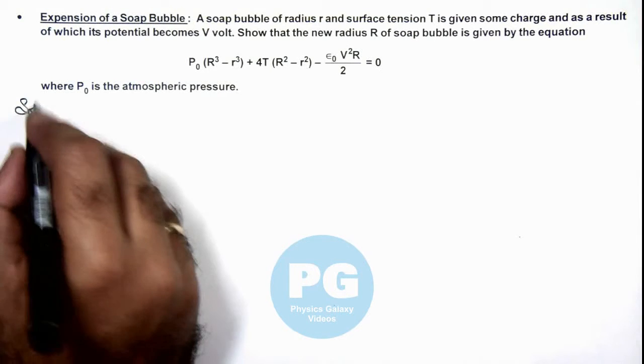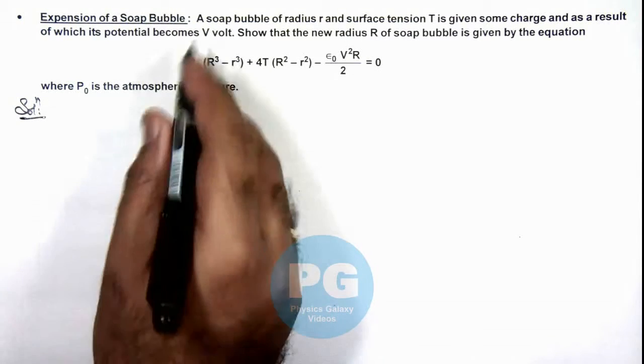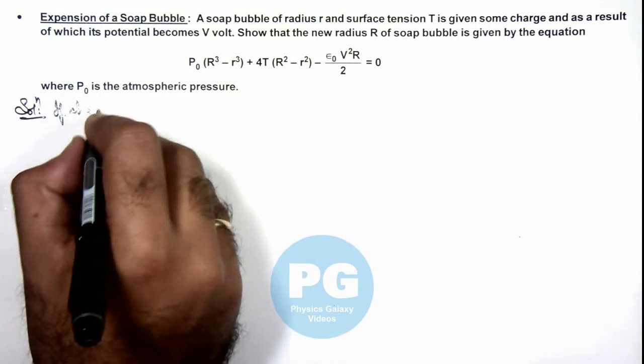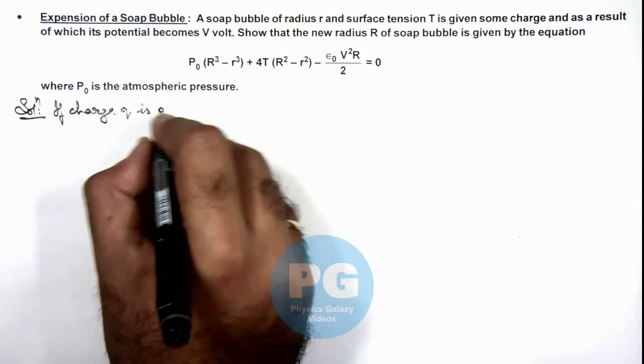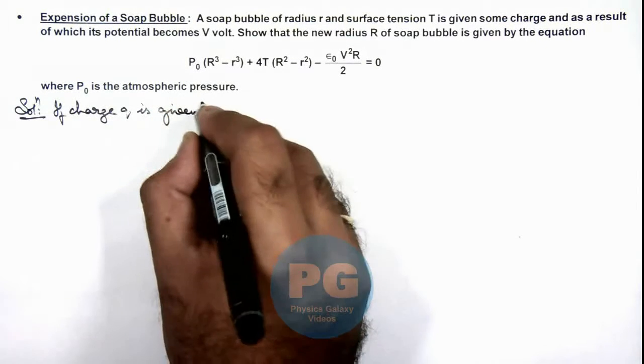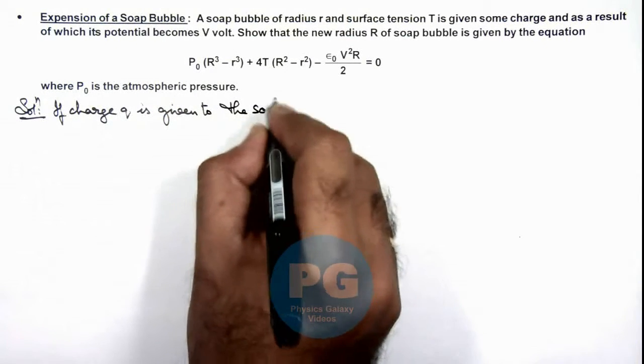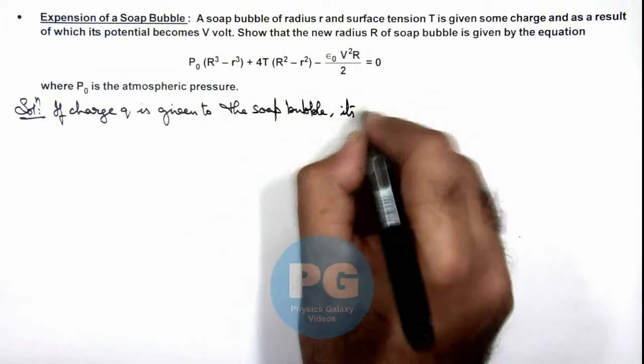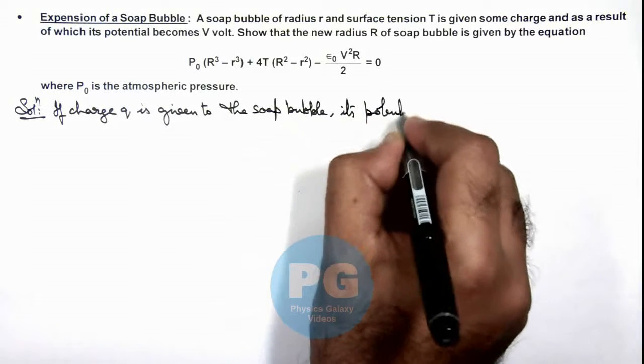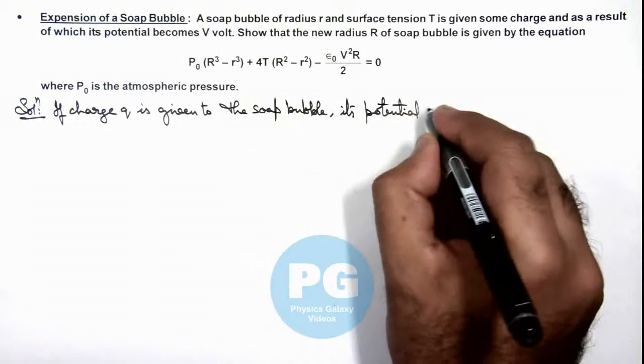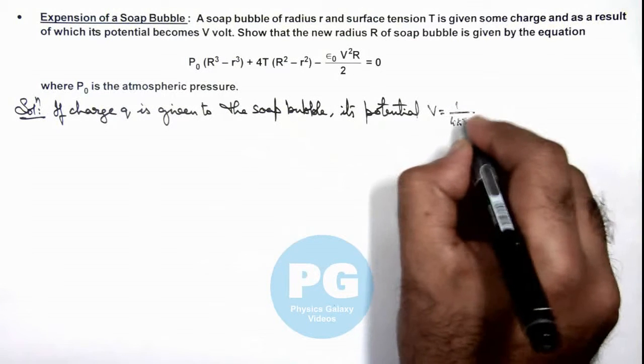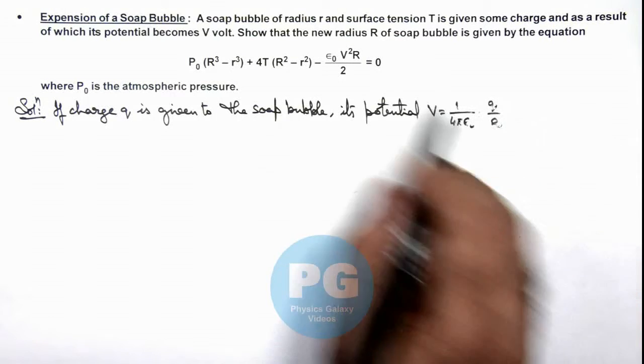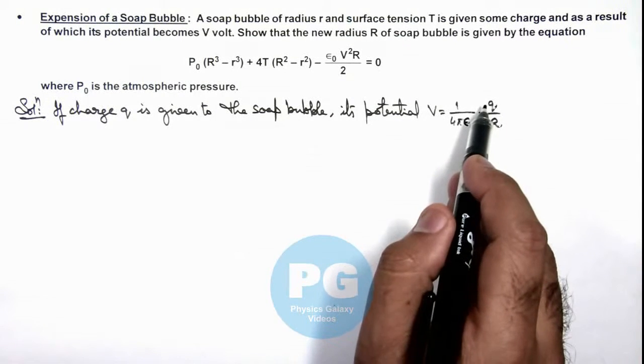So here in solution, first we analyze the potential. For which we can say, if charge q is given to the soap bubble, we can write its potential as V = (1/4πε₀) × (q/R). We'll take the radius to be the final radius R because after supplying charge it'll expand.